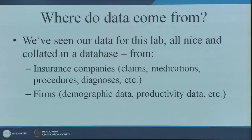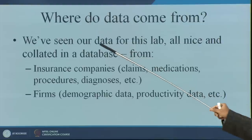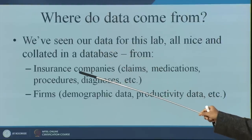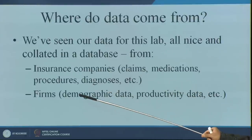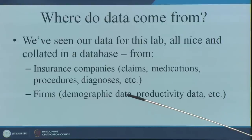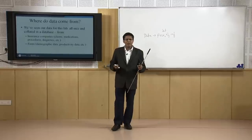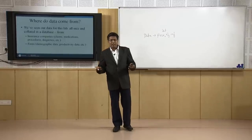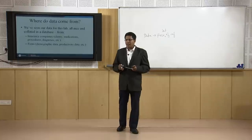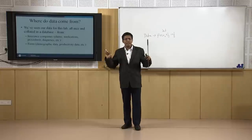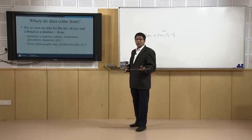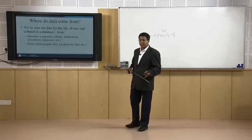So where does data come from? Data comes from everywhere. If you keep your eyes and ears open, data is all around you. It comes from insurance company claims, medications, procedures, diagnoses, demographic data, productivity data, or take a census where you have data on people of various religions, different genders, and income groups. Data is everywhere — but the question for any researcher is: what kind of data do we require?